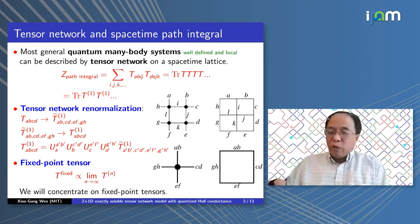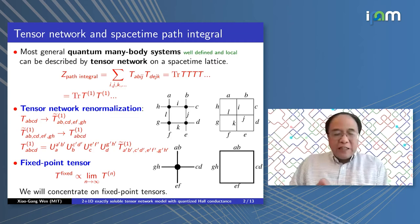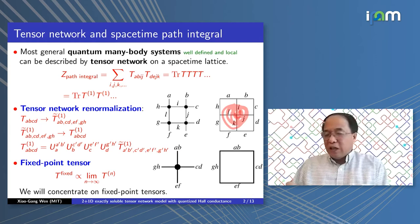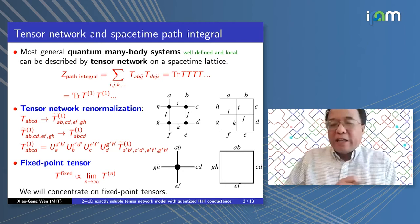Instead of using a bar to represent a tensor, we use a square to represent a tensor, where for a four-index tensor the indices live on the four edges of the square. The shared edge has the same index, and that index is summed over. Under tensor network renormalization, we simply erase the internal edges, going from four squares to one square — that is tensor network renormalization.